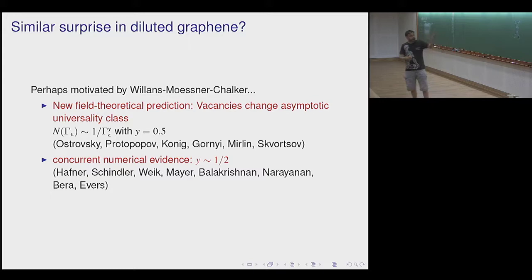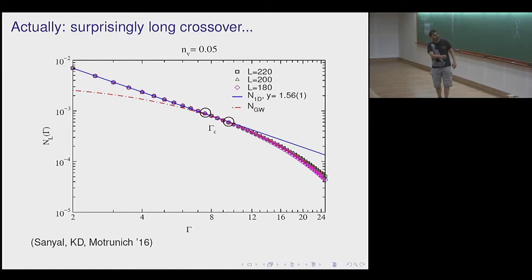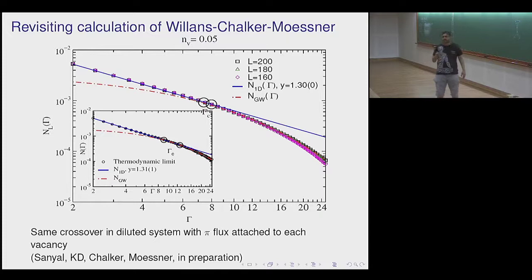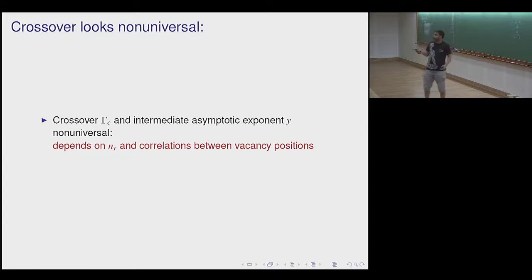A group around Mirlin made a prediction that there's a change in universality class when you dilute the system, giving a power-law behavior like in one dimension, and claimed this was exact with some numerical support. We looked at it more carefully in graphene a few years ago and found that although there's a long crossover where it does look like a power law (even out to energy scales of 10^{−8}), asymptotically it crosses over to Gade-Wegner form. It's an anomalously slow crossover. The same physics applies with flux attachment.